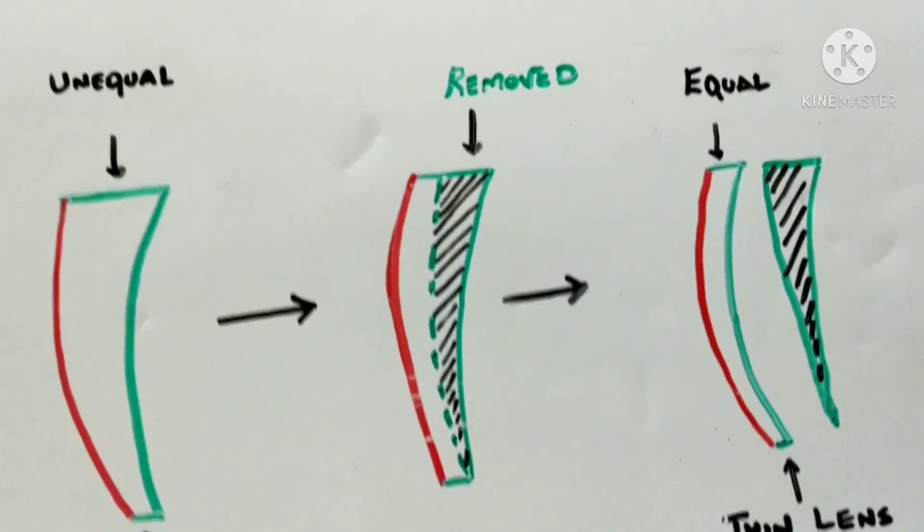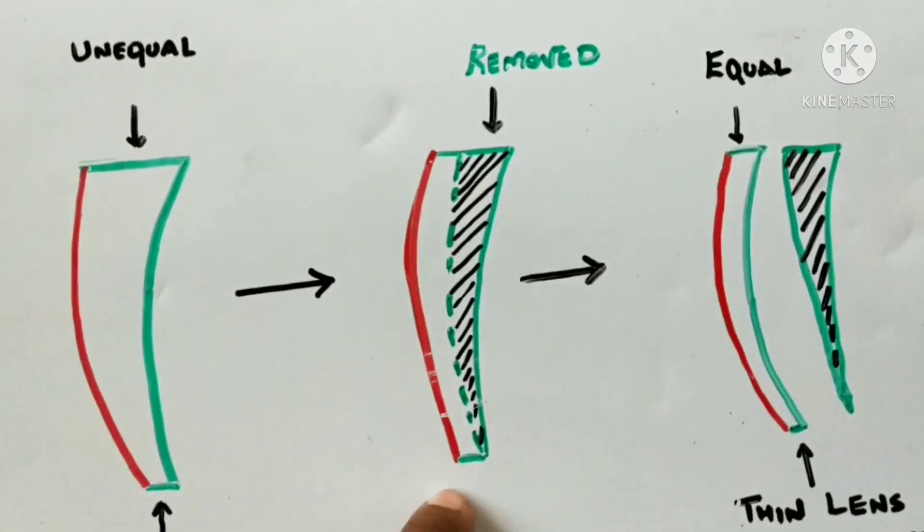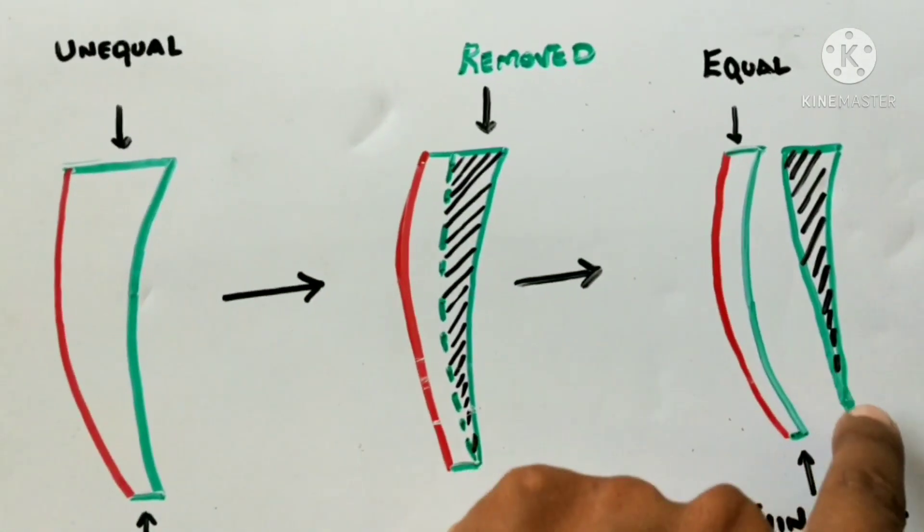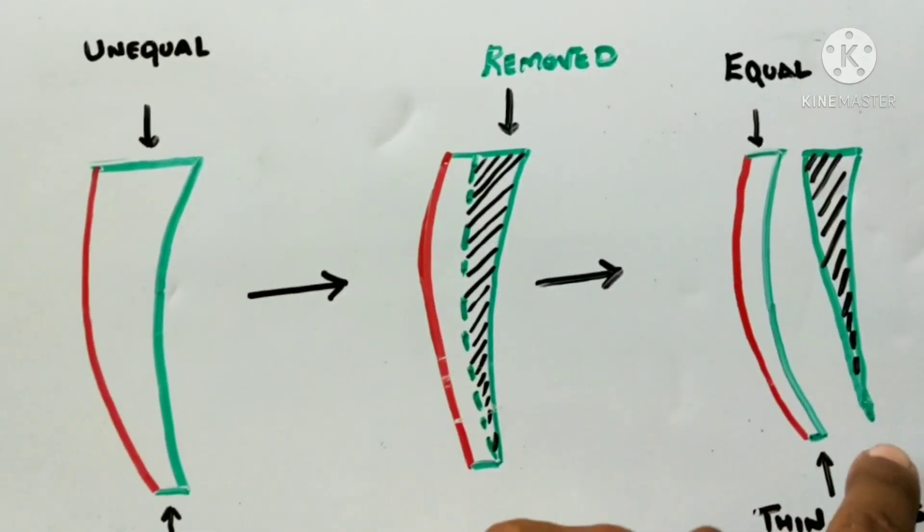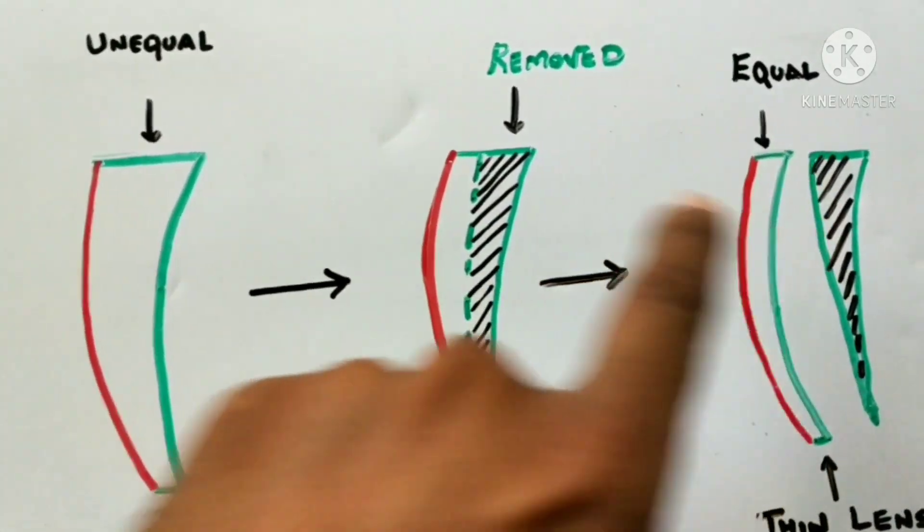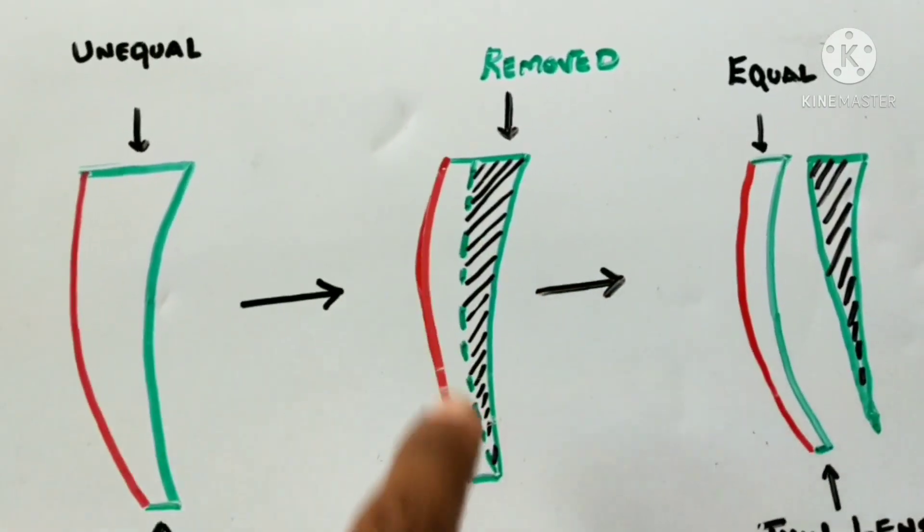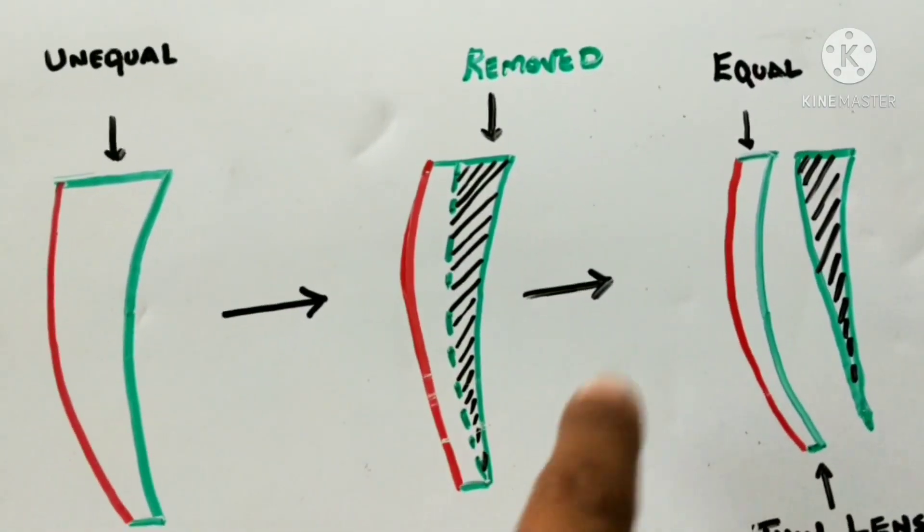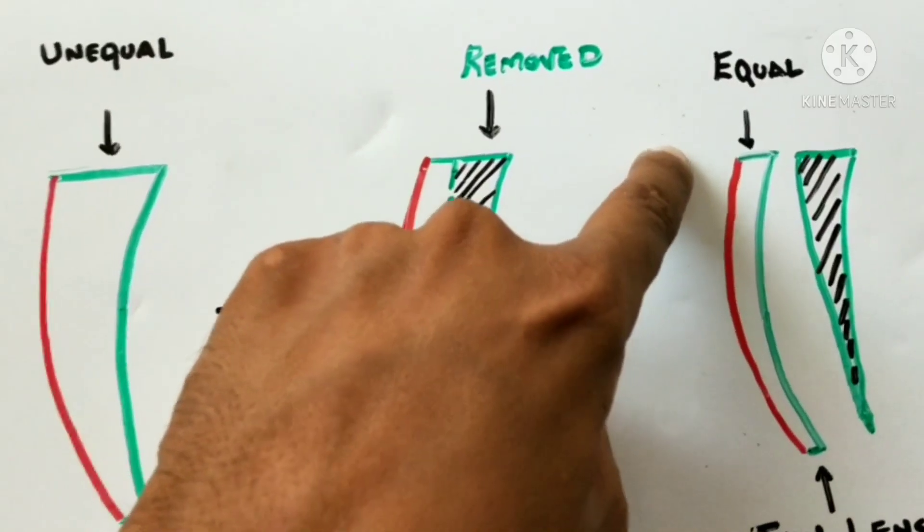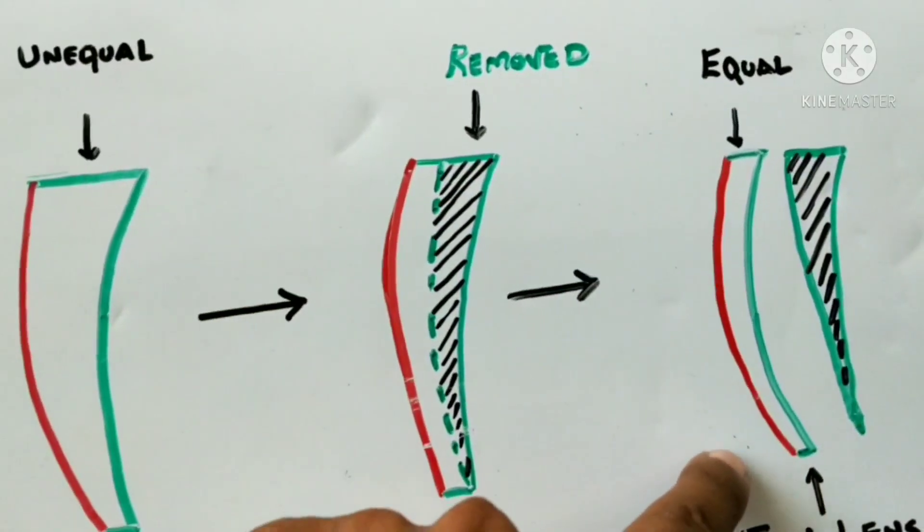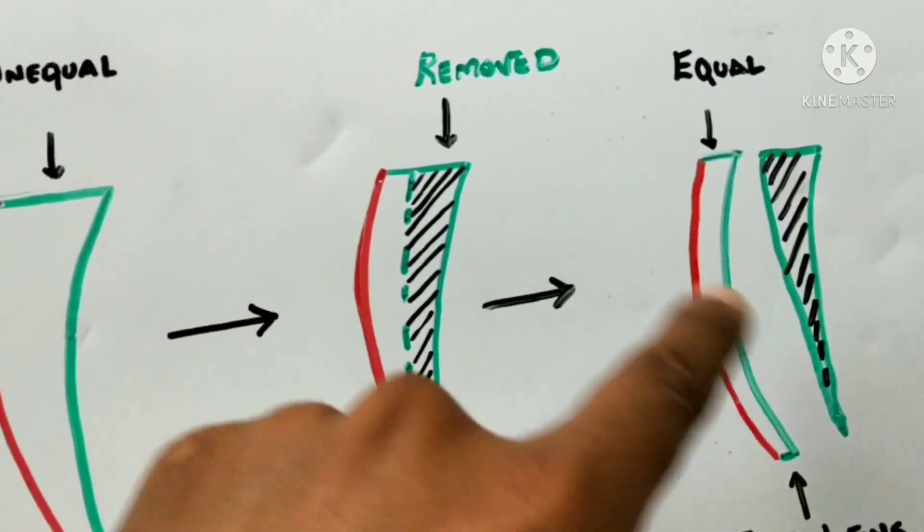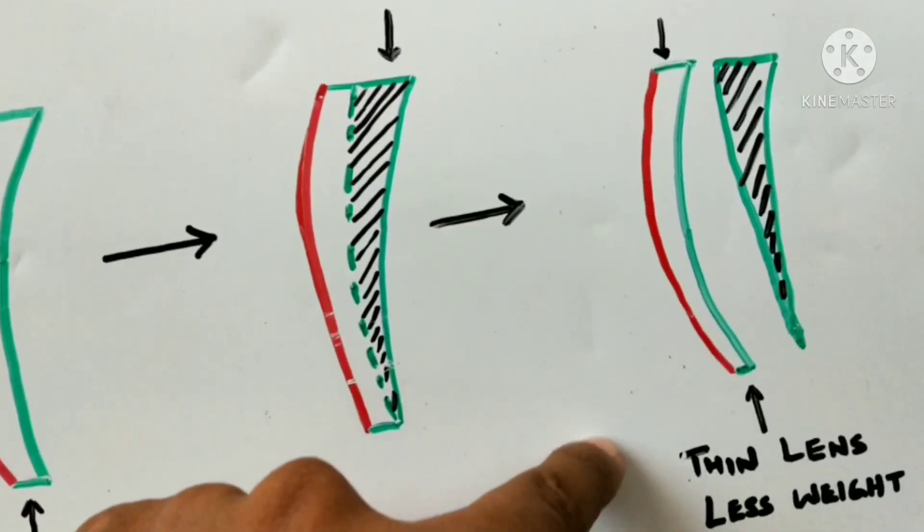How this equi-thinning happens: basically a part of a prism is removed. As you can see in the diagram, a base up prism is actually removed and base down prism is left over in the lens. When the base of prism is removed from the lens, the top portion and the bottom near addition portion almost become equal. This additional part of the prism removed from the lens will result in having a thin lens.